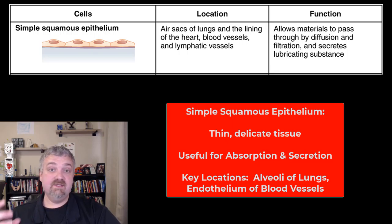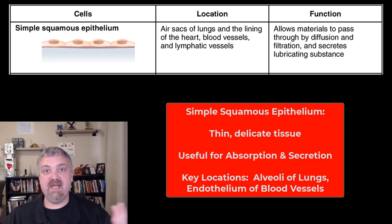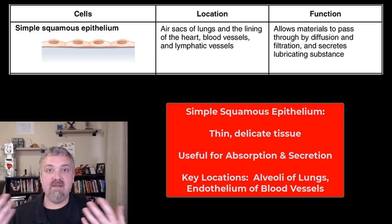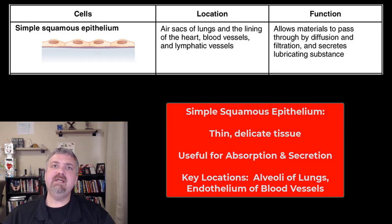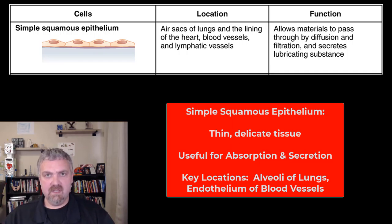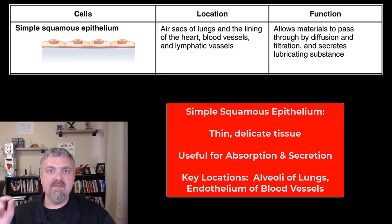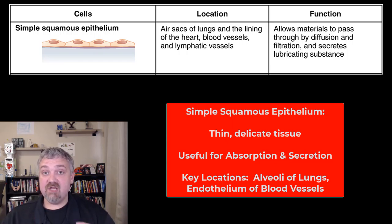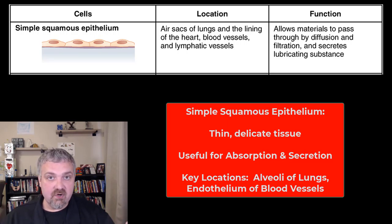Let's look at where you would find these. These are going to have to be in smooth, protected areas because there's no protective nature here at all. But where do we move a lot of material? Where do we need a lot of diffusion? The two key examples I think of are the alveoli, or the gas exchange surface of the lungs, and the endothelium that lines your heart and your blood vessels. The reason that term is important is because the actual cause of hardening of the arteries, heart disease, plaque forming in your arteries is endothelial dysfunction.